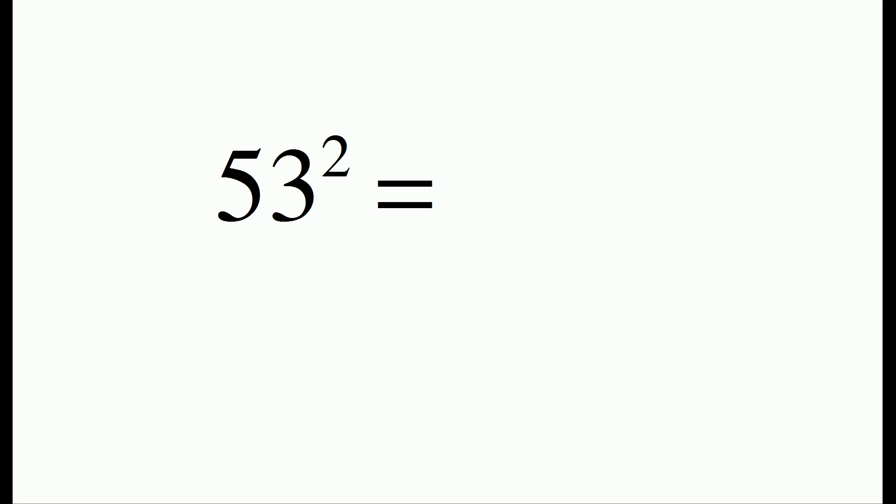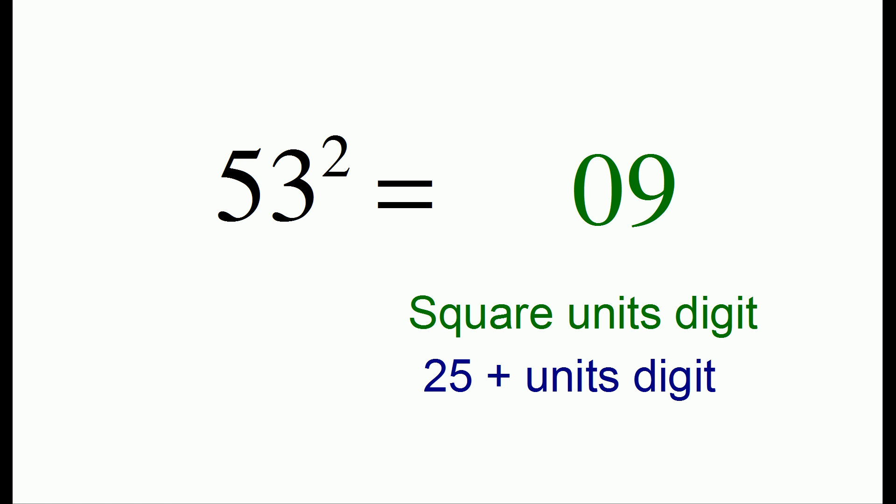For 53 squared, the unit's digit is 3. And when we square that, we have to make one adjustment, which is we want to write it as a two-digit number. So 3 squared is 9. We need to write that as 09. Then we go ahead and do the second step, which is 25 plus 3, and that gives us 28. So when you're doing this trick, always remember that when you square the unit's digit, you need to make it a two-digit number.